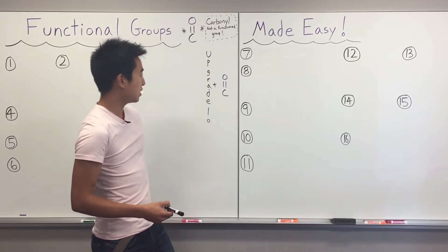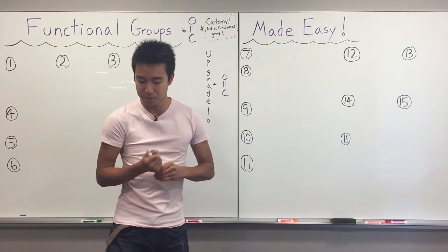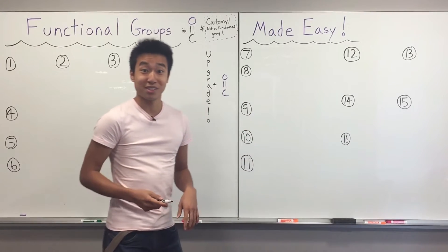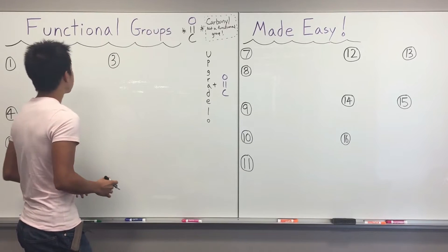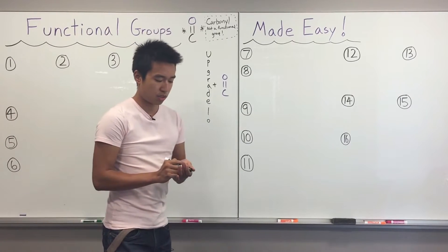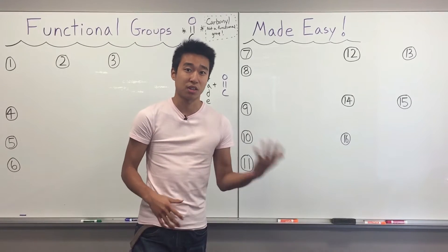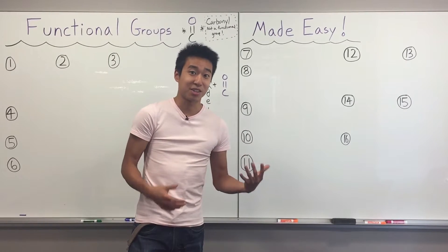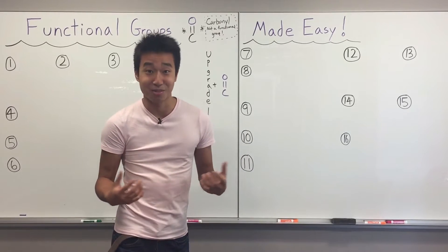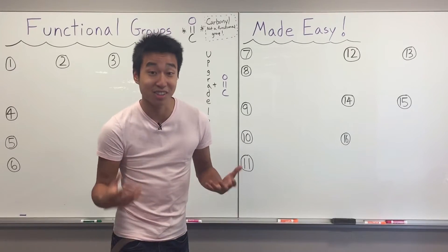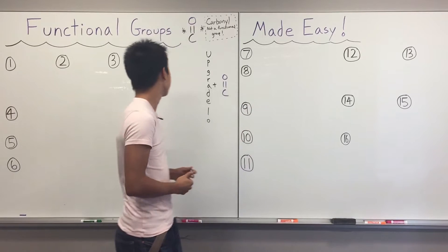We're going to go over 16 functional groups, just like in my very first video — well, one more because we have ketone this time. So in case you're taking Orgo and you're struggling with remembering the difference between an ether or an ester, or an amine or an amide, and they look basically the same — this video is going to help you break them up and differentiate them.